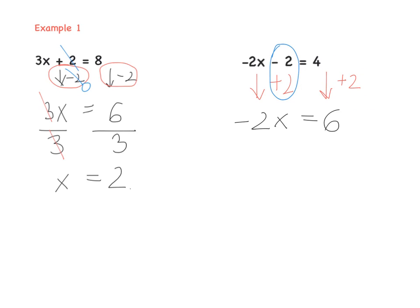We're back to the last video: minus 2x equals 6. We have minus 2 multiplied by x, so we need to divide both sides by the number beside x. That's algebra rule number 2: divide by the number beside x, in this case divide by minus 2 on both sides. Minus 2 divided by minus 2 is just 1x, so x equals — positive divided by negative is negative — 6 divided by 2 is 3. Done.